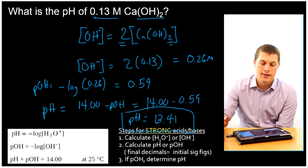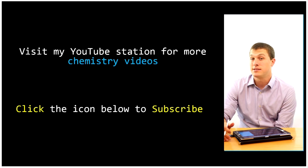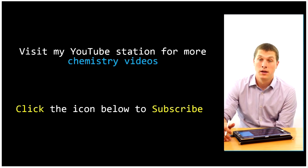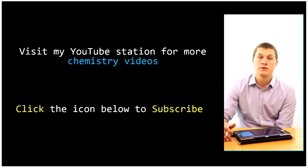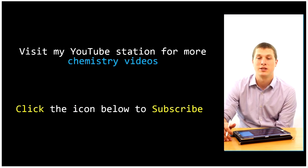So that's calculating the pH of acids and bases that are strong. Now you can go ahead and watch the video that's linked below where we're going to do that for weak acids and bases, which you'll see is a little more involved. Thanks for watching this episode of Real Chemistry. You can subscribe by clicking the banner below or visit my channel. Thanks for watching.